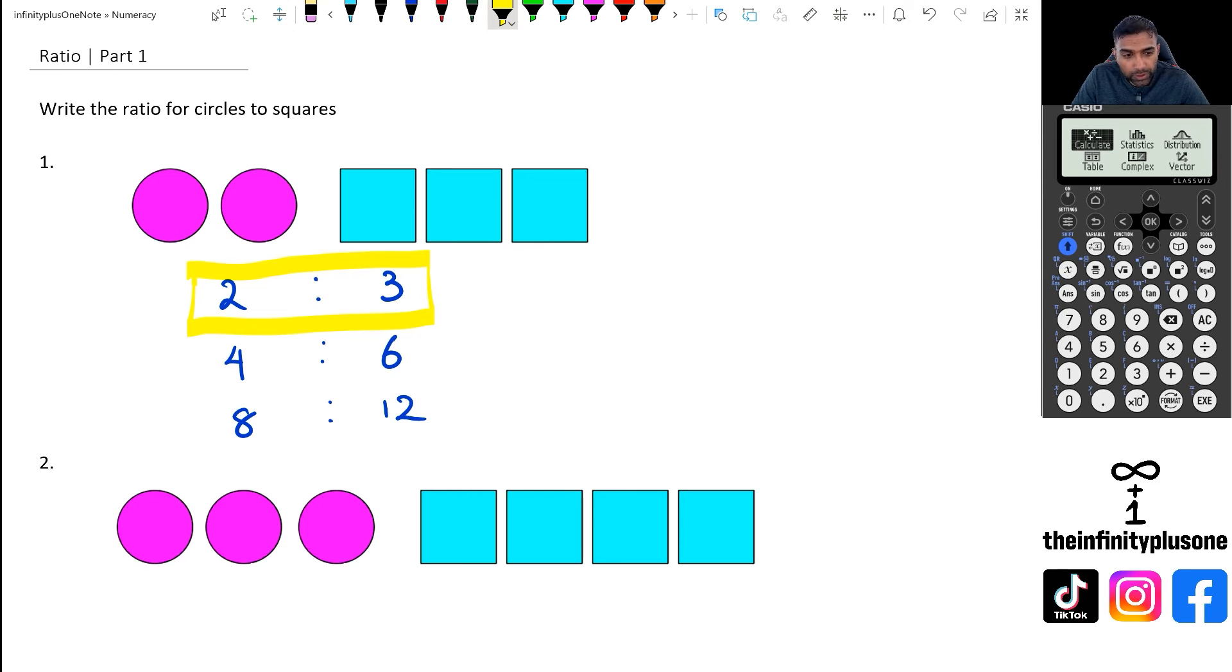Moving on to question two, we've got three circles and four squares. So in this case, all we're really going to do is just put it as 3 is to 4. And that pretty much covers just the introduction to ratios.